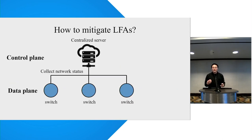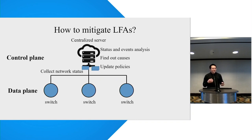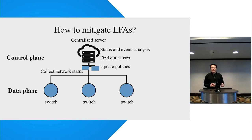Traditional link flooding defense is based on a centralized strategy. The centralized server can collect network state from the data plane, analyze the states and events, find out their cause and location, and finally update policy to mitigate attacks.